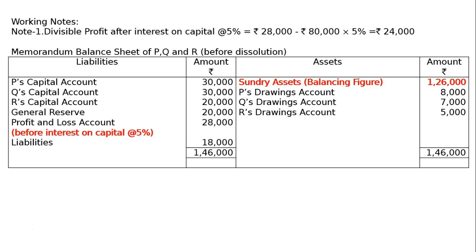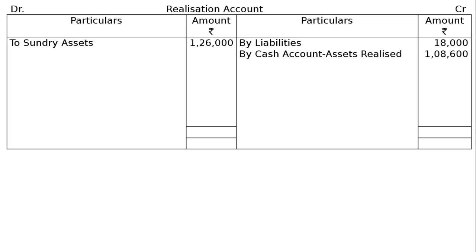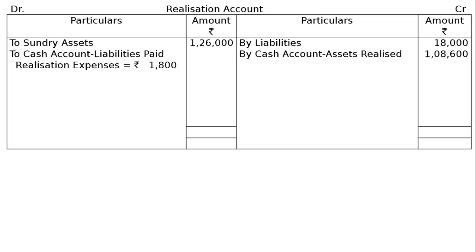For the dissolution, prepare the Realization account in proper format. Debit side: sundry assets Rs. 1,26,000. Credit side: by liabilities Rs. 18,000; by cash account for assets realized Rs. 1,08,600. Debit side: to cash account for liabilities paid — realization expenses Rs. 1,800 and liabilities Rs. 18,000 — total Rs. 19,800.